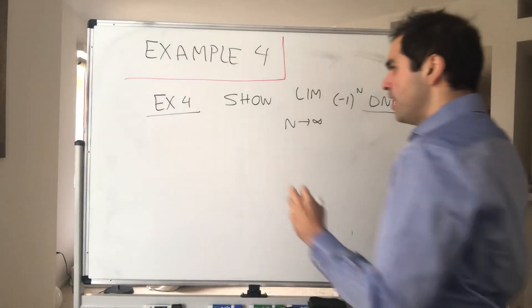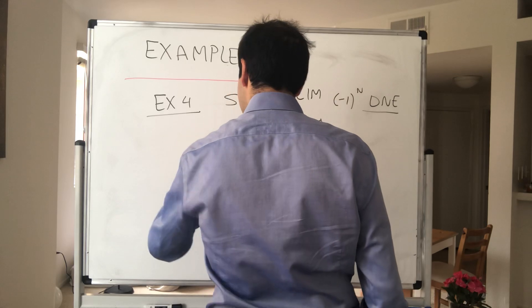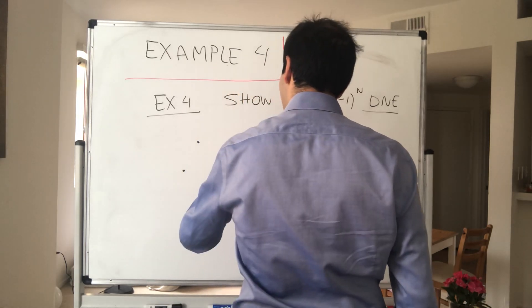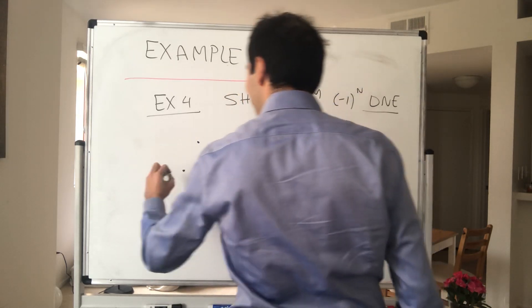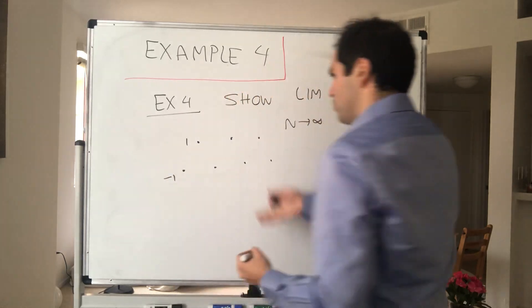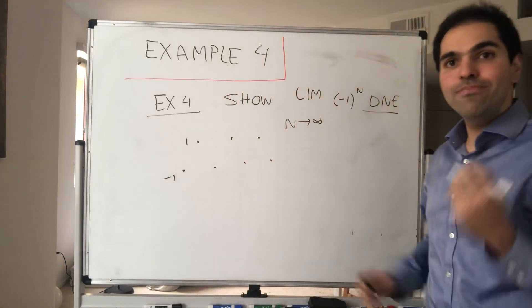Which, by the way, it should make sense, because (-1)^n just jumps back and forth between -1 and 1. In some sense, it doesn't really make up its mind.